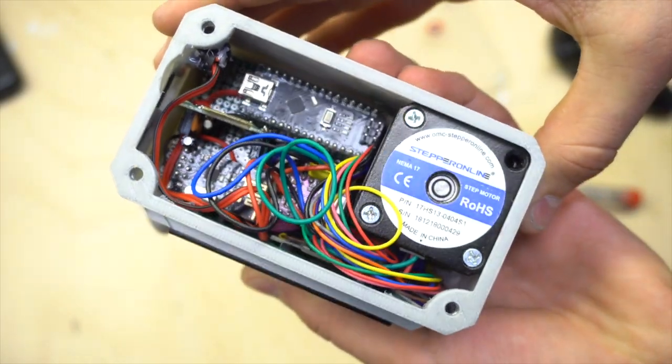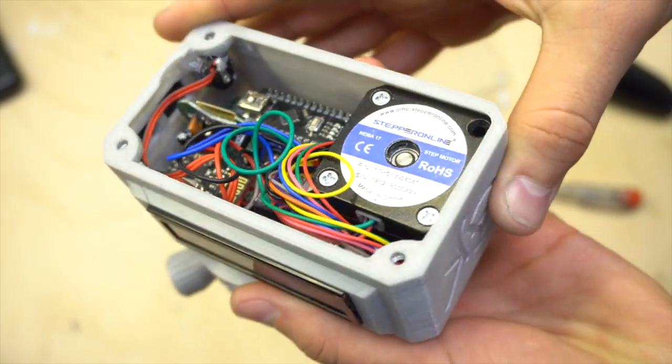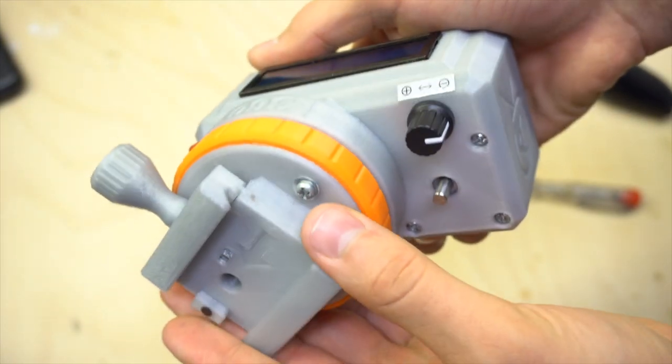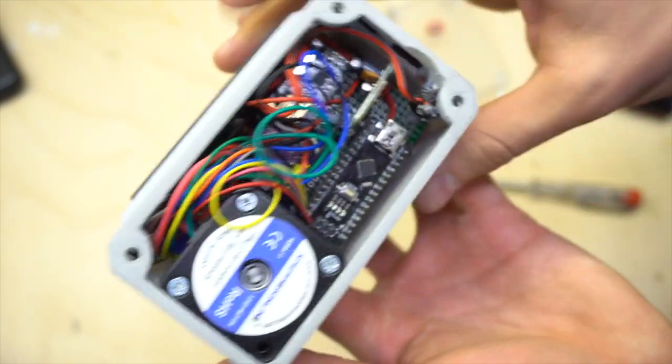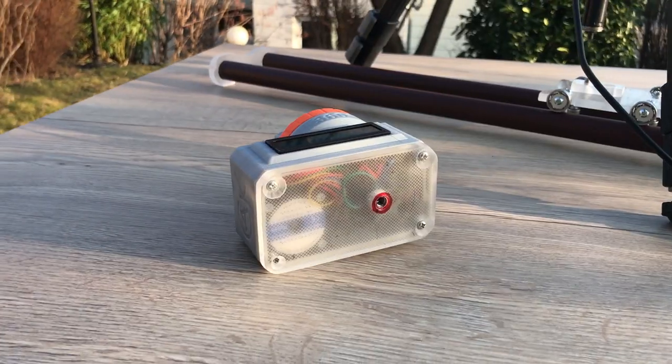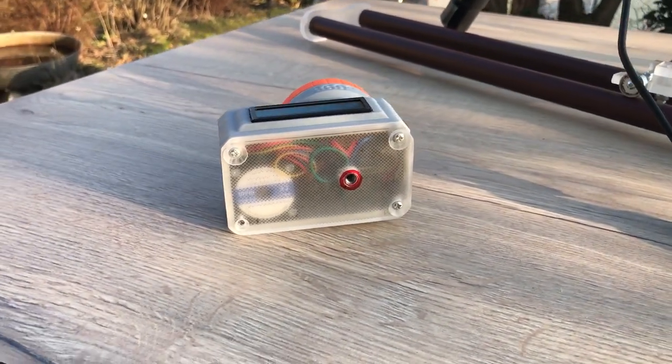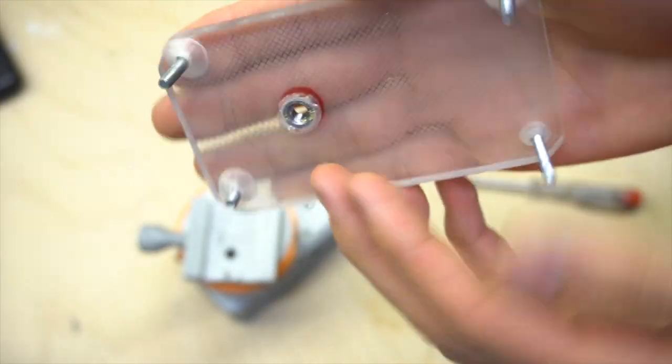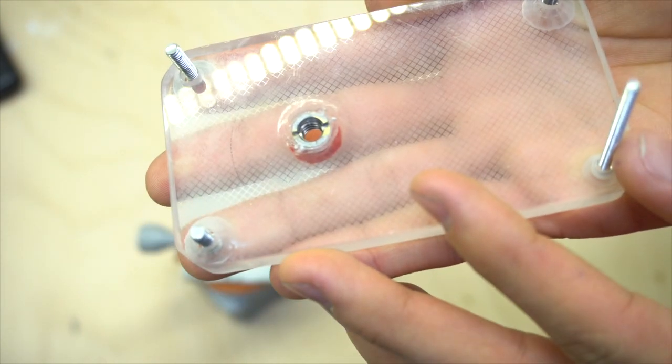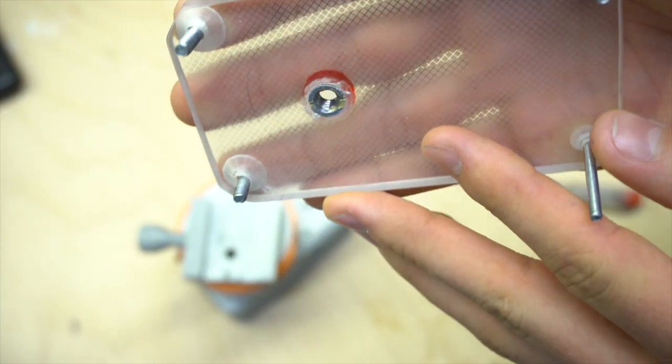After unscrewing the base plate here you can have a clear look at all the electronic components I built into the device and also the stepper motor. On the top we've got a quick release plate. The base plate has a standard quarter inch tripod mount on the bottom which is made out of metal so that everything stays safe and you can mount this device to any ordinary tripod.